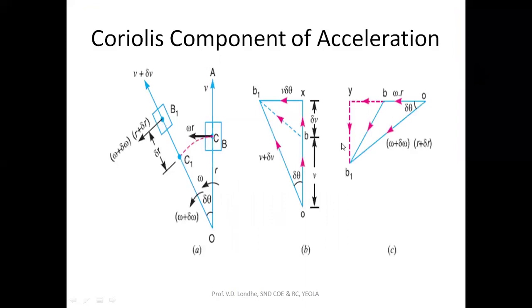First of all, this Coriolis component of acceleration is applicable to the Shaper machine, where we are using a slotted link in which the slider slides. The best example is the Shaper machine or crank and slotted lever mechanism or quick work return mechanism.